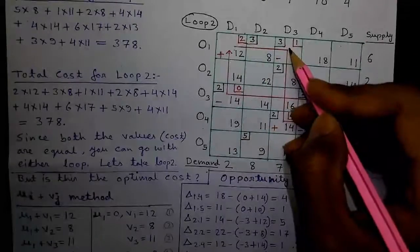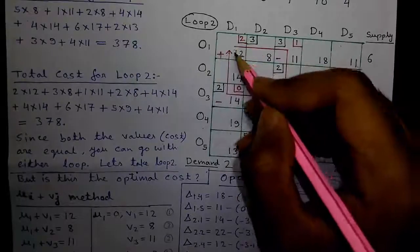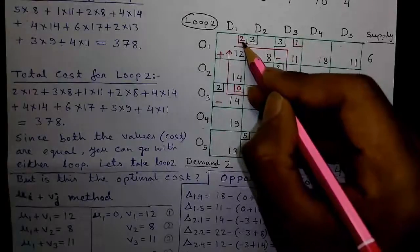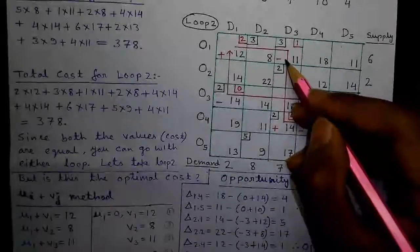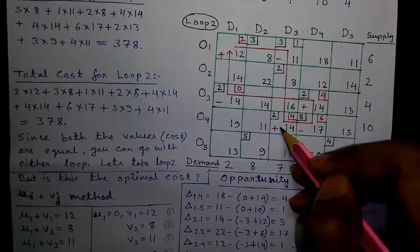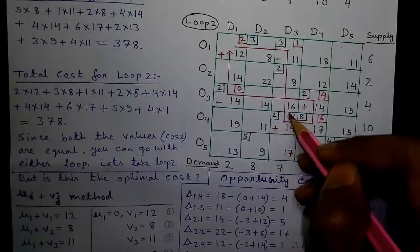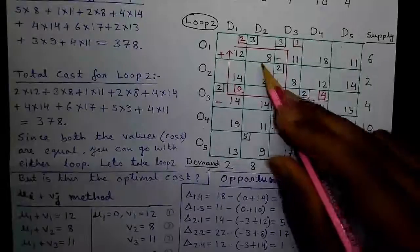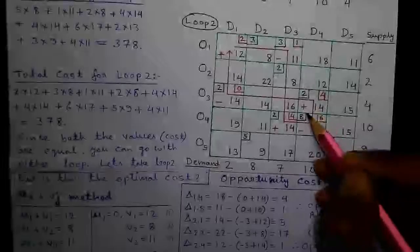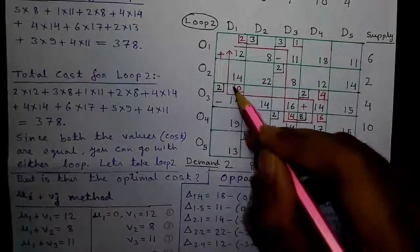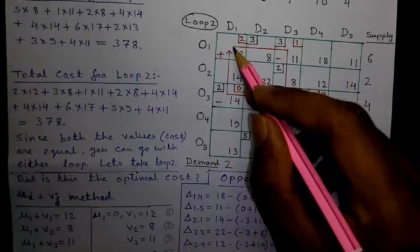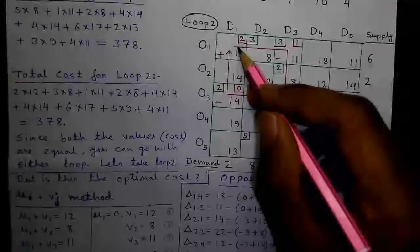At our first cell this will be a plus cell, so we allocate the value — our new allocation is 2. The next cell is a minus cell, so we subtract: 3 minus 2 is 1. The next cell is a plus cell: 2 plus 2 is 4, our new allocation. The next is a minus cell: 8 minus 2 is 6, our new allocation. Next is a plus cell: 2 plus 2 is 4. Next is a minus cell: 2 minus 2 is 0, meaning there will be no allocation. Finally, coming back to our starting cell — the loop is complete.